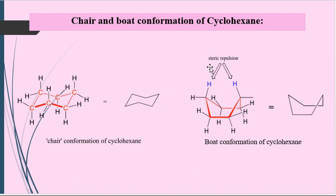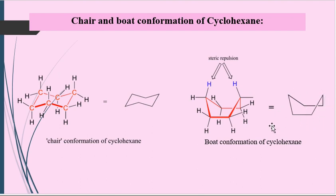The next conformation of cyclohexane is boat conformation. This is the boat conformation of cyclohexane. Here we have six carbon atoms total. Carbon number two, three, five and six are in the average plane, and both carbon one and carbon four are above the average plane. This conformation is called boat conformation and it is represented like this.